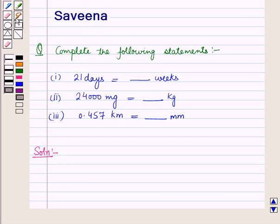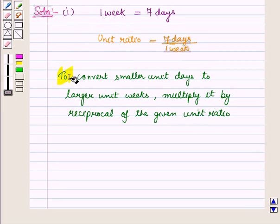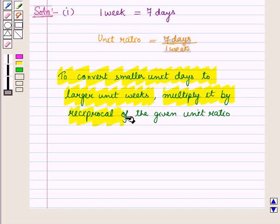In the first part we are given 21 days and we have to convert days into weeks. Now we know 1 week is equal to 7 days, which is the unit ratio: 7 days upon 1 week. Now to convert a smaller unit, that is days, to a larger unit, that is weeks, we multiply it by the reciprocal of this given unit ratio.